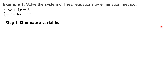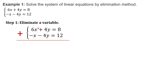Let's start with eliminating a variable by adding the equations. Positive 6x plus negative x will give us positive 5x, since the coefficient is negative 1, so it's 6 plus negative 1. Since our goal is to eliminate a variable, positive 4y plus negative 4y will be cancelled because it equals 0. You do not have to write 0. Then, 8 plus 12 will give us positive 20.